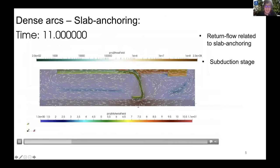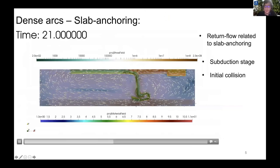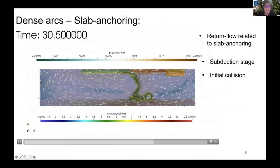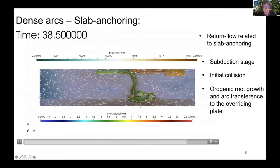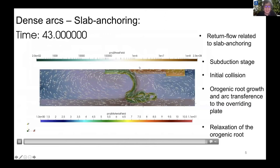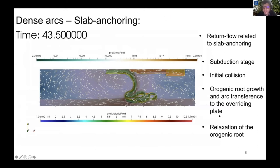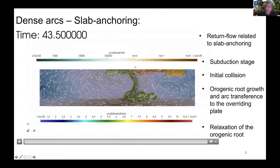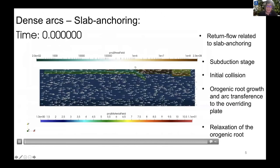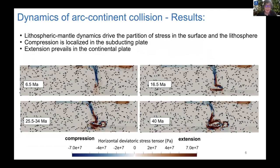The onset of slab anchoring results in the development of a large-scale return flow that increases collision during arc-continent collision and results in the formation of an orogenic root. However, after collision, the arc transfers to the continental plate and gravitational flow emerges within the former arc, driving the relaxation of the orogenic root. Now I will show you the spatial-temporal evolution of stress.